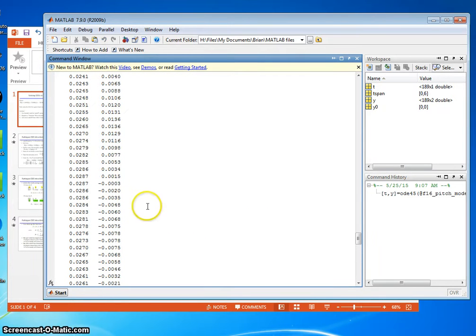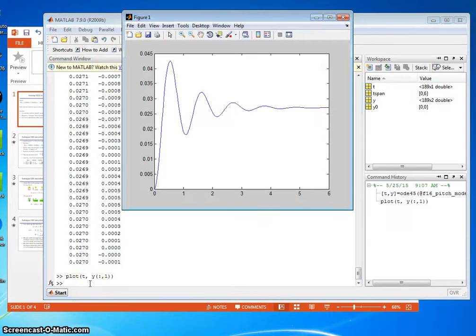There are the two columns of Y output. The first column is θ. The second column is θ̇. If I wanted to plot time Y(:,1), it gives me θ versus time. I could obviously pretty it up with axis labels and such. That's basically how you use ode45.